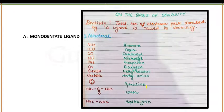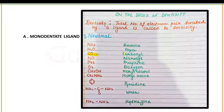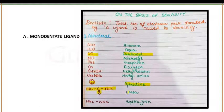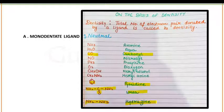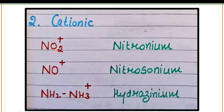In neutral monodentate ligands, you have to learn the name of carbon monoxide — that is carbonyl. Pyridine, NH2-CO-NH2 is urea, and NH2-NH2 is hydrazine. These are all examples of neutral monodentate ligands and the highlighted ones are very important. Next are cationic monodentate ligands.